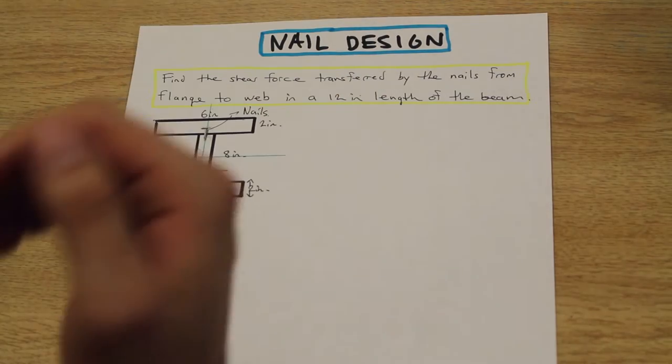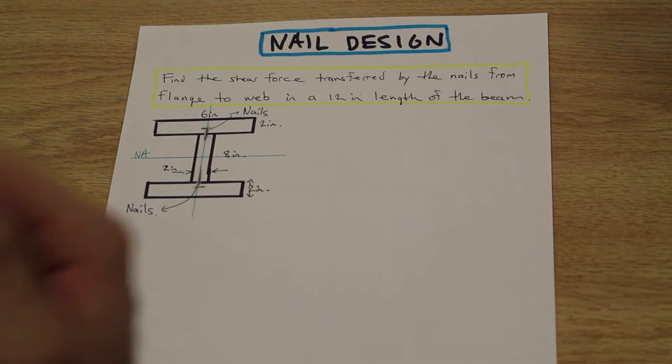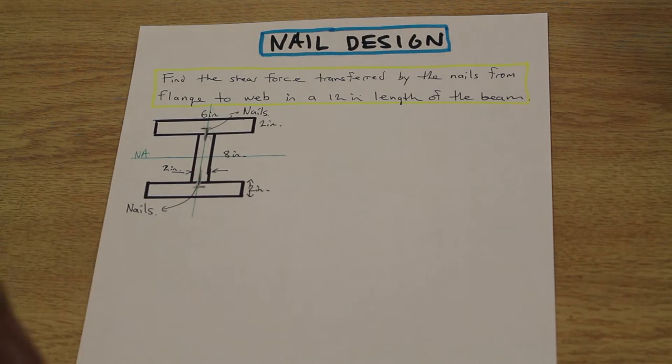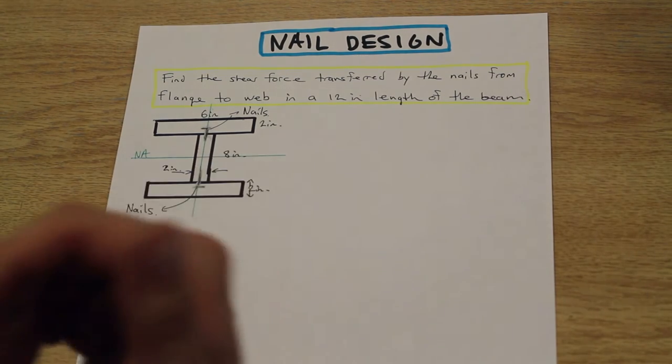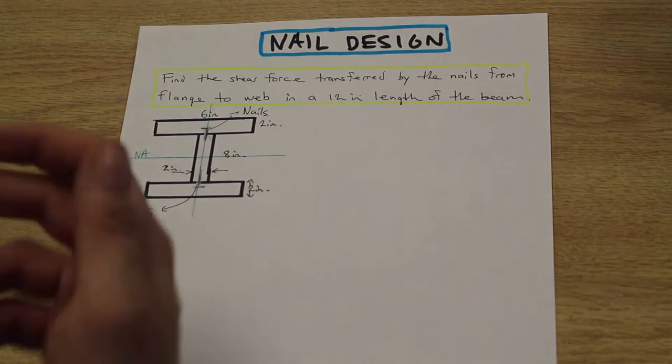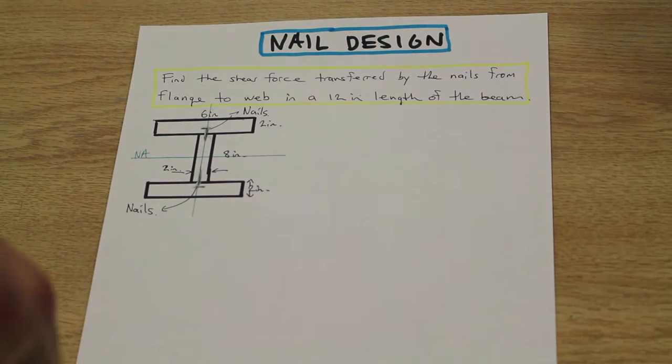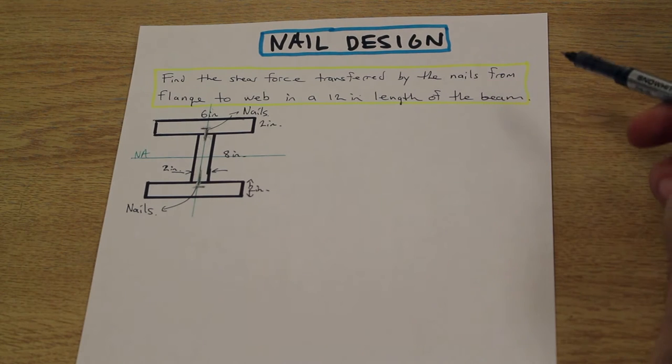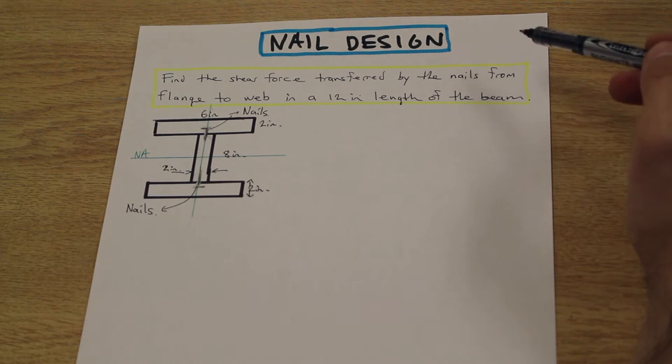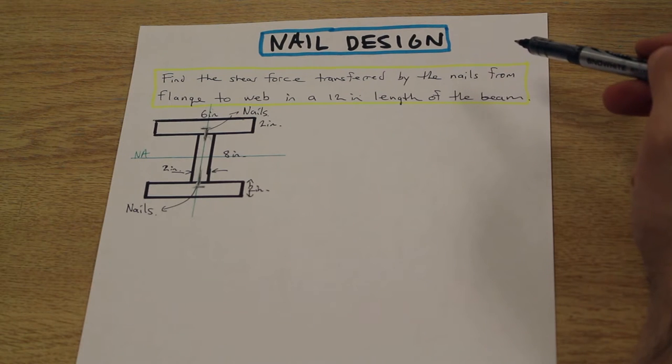The beam is going to be subjected to some shear force, and all the nails are as well. We are going to determine the spacing of the nails and the shear force transferred by the nails to the web. That's just a general overview. Let's look at the first question: find the shear force transferred by the nails from flange to web in a 12 inch length of the beam.